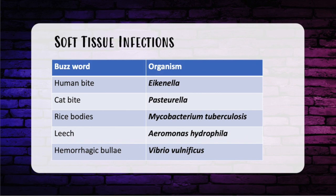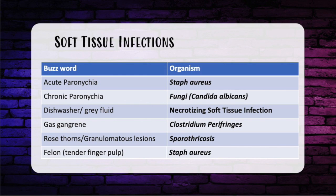Hemorrhagic bullae — Vibrio vulnificus. Acute paronychia — Staph aureus. Chronic paronychia — fungi, most commonly Candida albicans. Dishwasher or gray fluid — necrotizing soft tissue infection. Gas gangrene — Clostridium perfringens. Gardener working with rose thorns presenting with granulomatous lesion — Sporotrichosis. Felon or tender finger pulp — Staph aureus.